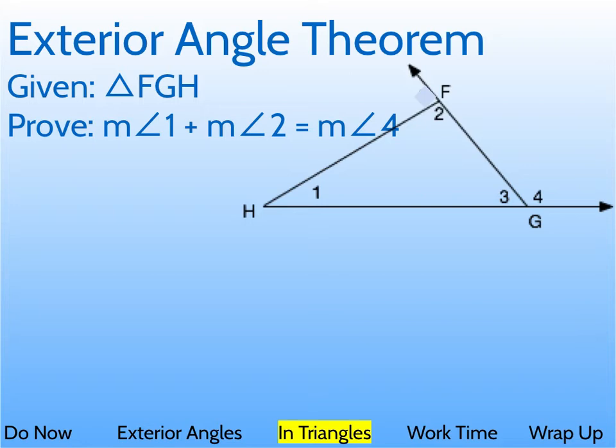We're going to prove it in a second, but if you have an exterior angle, its measure is equal to the measure of the two remote angles - the angles that are not next to the exterior angle. So let's look at it.